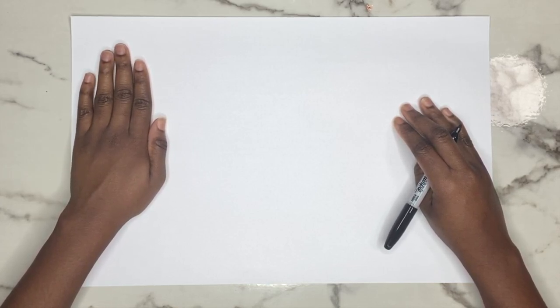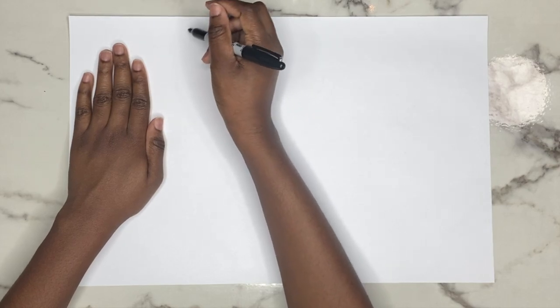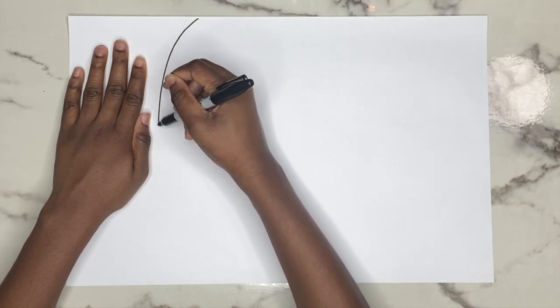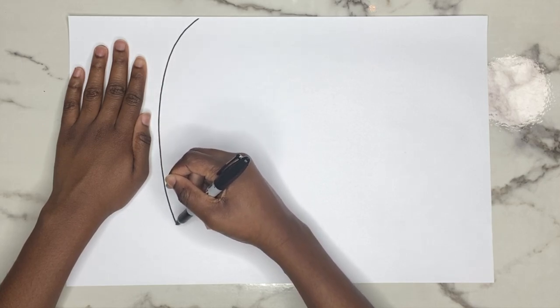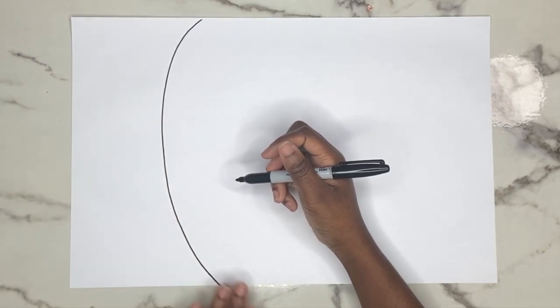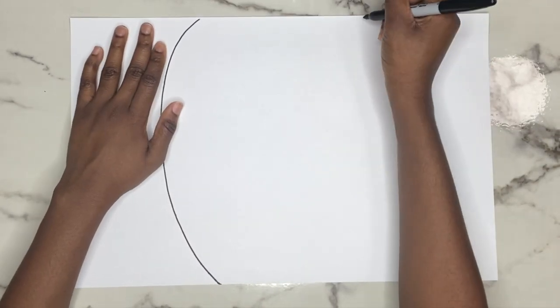And then I'm going to go in with my curved line. When you're curving your line, you want to think about the shape of your head. For me, my chin starts to get a little narrow towards going down, so you see my curved line going that way.